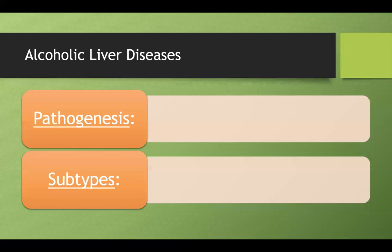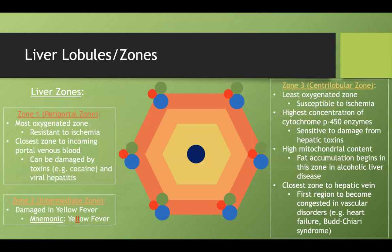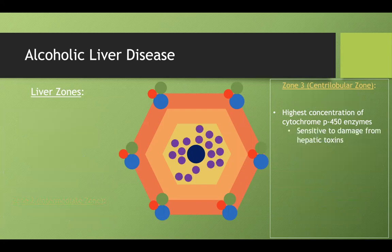We'll start with alcoholic hepatitis. As the name suggests, alcoholic liver disease is where consumption of alcohol damages your hepatocytes. This damage most commonly affects zone 3, or the centrilobular zone of the liver. Zone 3 has the highest concentration of P450 enzymes, and alcohol can damage those P450 enzymes directly.